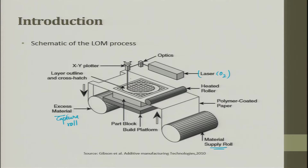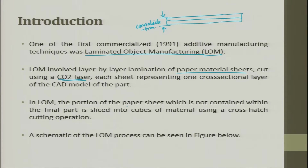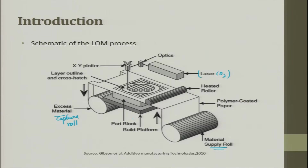The rest of the reel is rolled on the other side. Grids are formed representing the information to be engraved in that layer. The portion of the paper sheet not within the final part is sliced into cubes using a cross-hatch cutting operation. After one layer is done, either the spool height goes up or the table sinks down, creating layers one by one. This is the part block being created with all the layers. The platform moves down as layers are added.